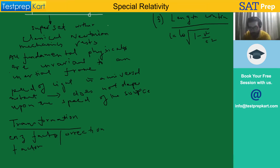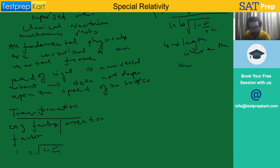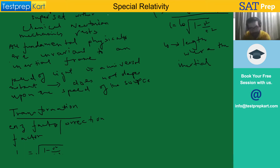This is length contraction — where you are the observer. L₀ is the length where the inertial frame is at rest, meaning you are the observer. You are observing everything with respect to that inertial frame and accordingly bringing about the calibration — the changes in time, length, as well as mass.